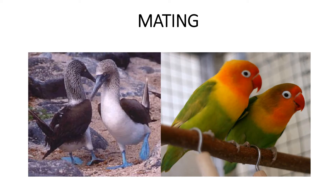Mating. Most animals reproduce sexually. Animal and human sexual reproduction possess many similarities. If human reproduction has been clear for you, animal reproduction will be very easy to understand. To produce an offspring, the sperm and egg have to meet. In order for sperm and an egg to meet, the male and the female must mate.